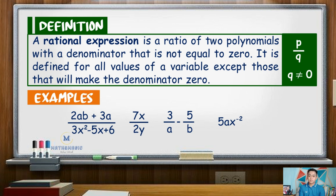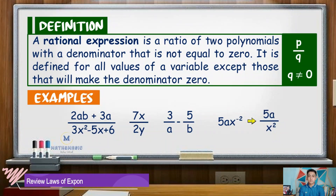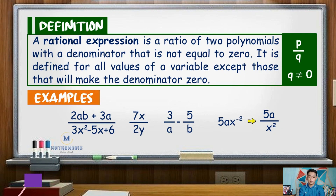Notice that the expressions are written in the form P over Q. 5AX raised to negative 2 can also be written as 5A over X squared, since according to laws of exponents, when an exponent is negative, we can place that term on the other side of the rational expression.